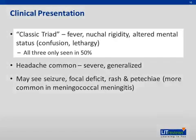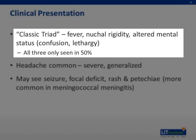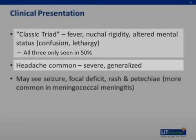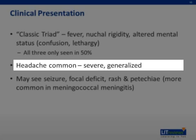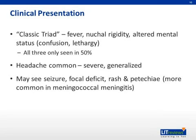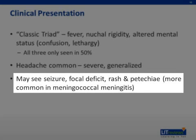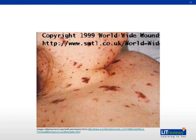There is a classic triad to meningitis: fever, nuchal rigidity, and altered mental status such as confusion and lethargy. Curiously, the classic triad is only seen in about 50% of all cases. Headache is the most common symptom, described as severe and generalized. You will generally see fever, and may also see seizure, focal deficit, rash, and petechiae. Petechiae are a maculopapular rash that is blanching, and you'll see that more commonly in meningococcal meningitis caused by Neisseria meningitidis. The picture shown here depicts the petechiae associated with meningococcal meningitis in a child.